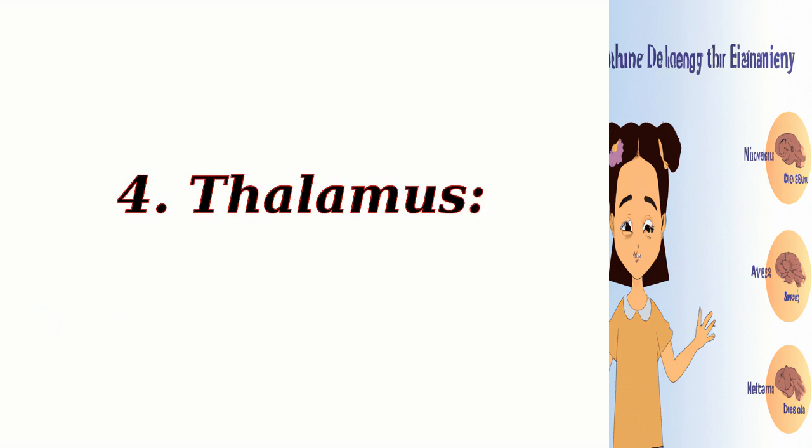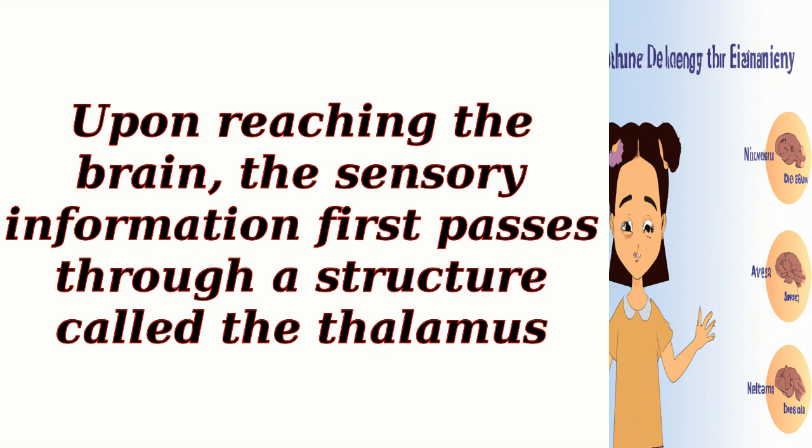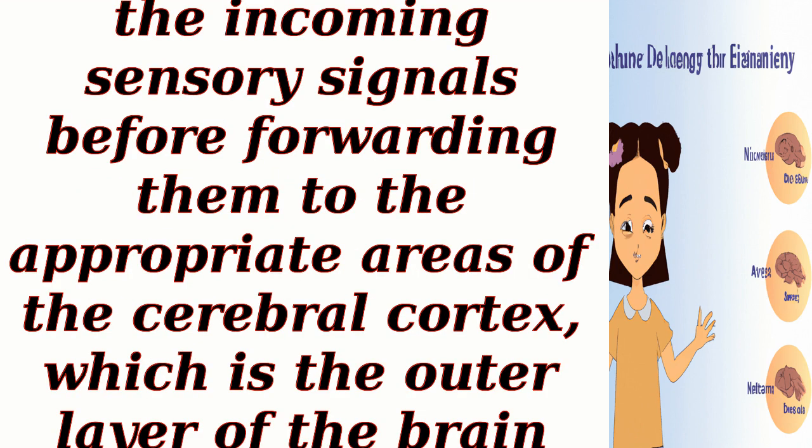4. Thalamus. Upon reaching the brain, the sensory information first passes through a structure called the thalamus. The thalamus acts as a relay station, sorting and filtering the incoming sensory signals before forwarding them to the appropriate areas of the cerebral cortex, which is the outer layer of the brain responsible for higher-level processing.